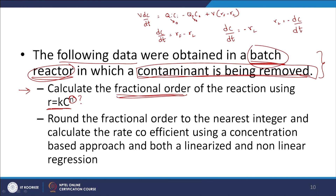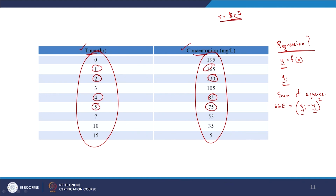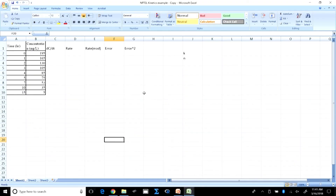I need to calculate the fractional order of the reaction using R equals K times C to the power of N. Since R equals minus dC/dt for a batch reactor, I need to calculate the rate at each sampling time from the concentration versus time data. My model is R versus C, so I need rate data. Let us switch over to Excel and get this done.